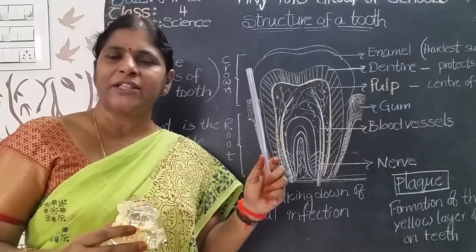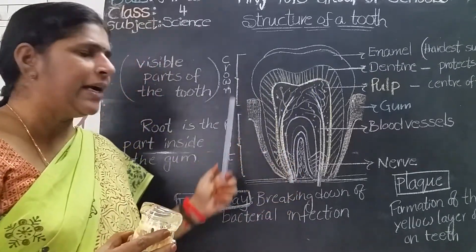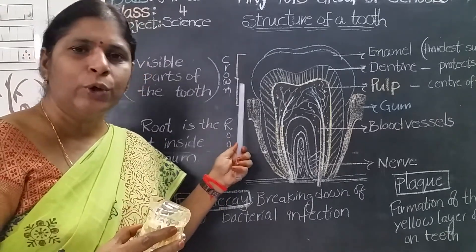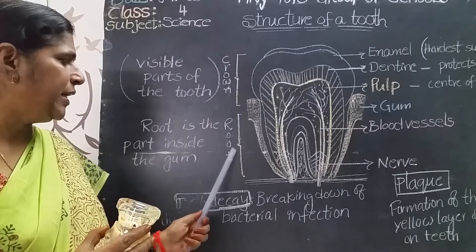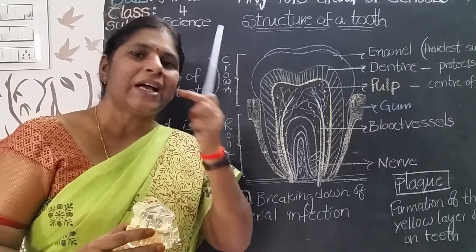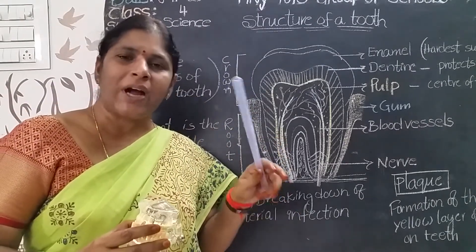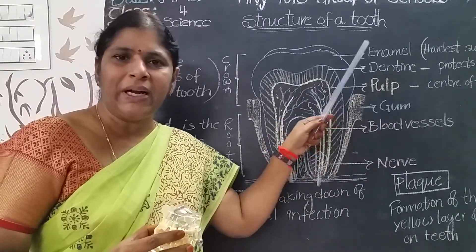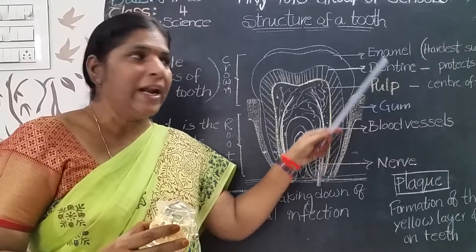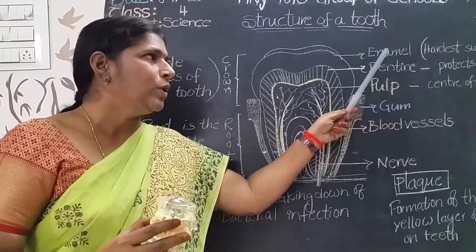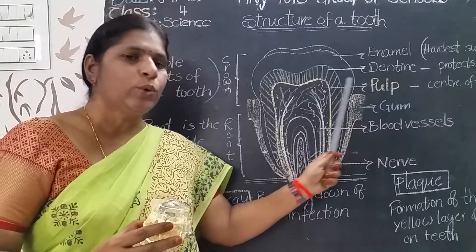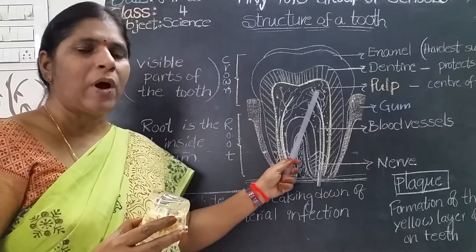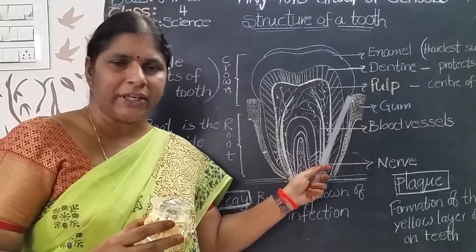Every tooth has two parts: crown and root. Crown is the visible part of the tooth. Root is the part inside the gum. Each tooth has three layers: enamel, dentine, and pulp. Enamel is the outer layer; below the enamel is the dentine; the center of the tooth is called pulp. Pulp is the soft part and has blood vessels and nerves in it.